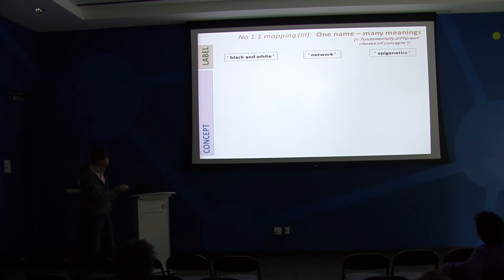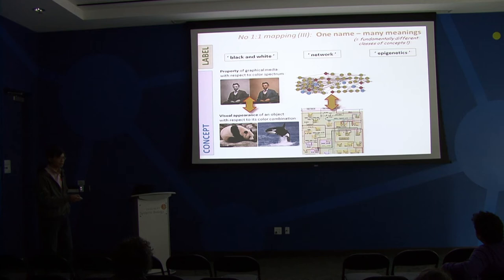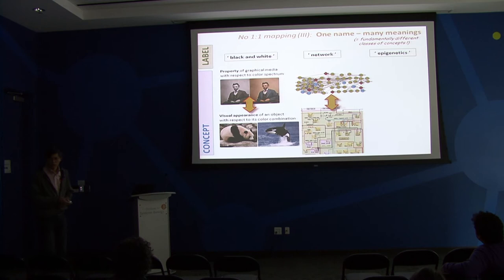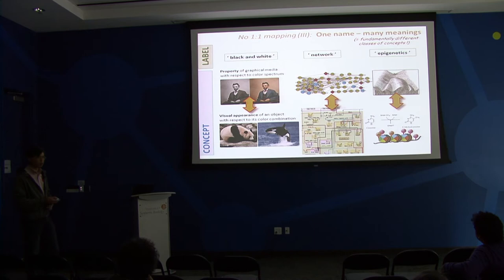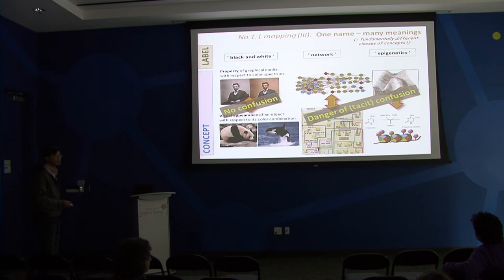This tells you that it's important to know about the distinction between the label and the concept behind it. Now let's move to more scientific terms. Starting with the artificial example of 'black and white' - there's no big problem with those two meanings. But behind 'network' there are problems: entirely independent entities behind the term that superficially look similar. The same is true for 'epigenetics,' which many people have abused and which can mean totally different things. Almost no author in scientific papers explicitly addresses that distinction.